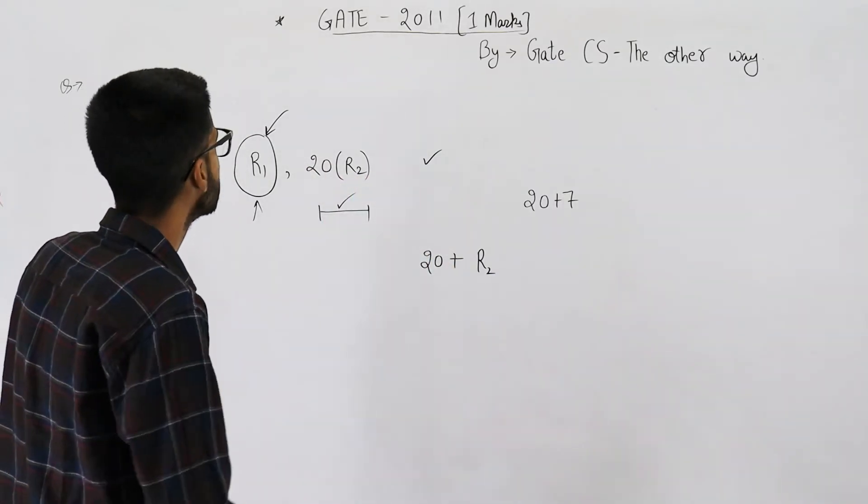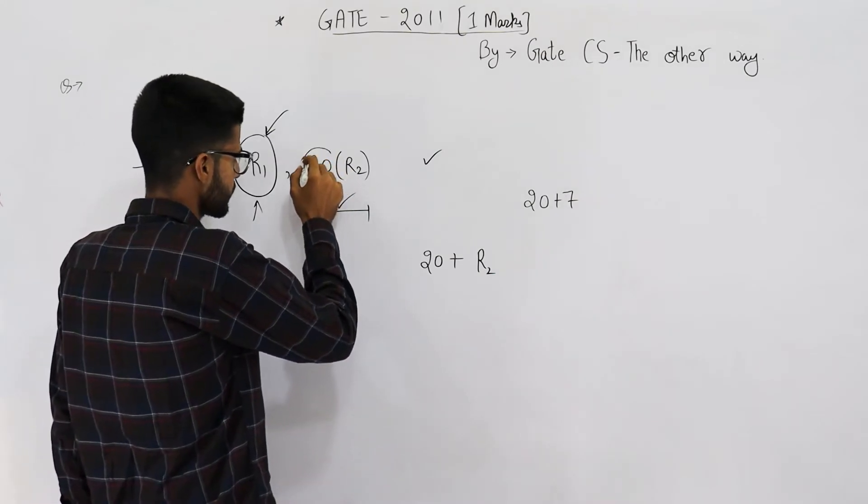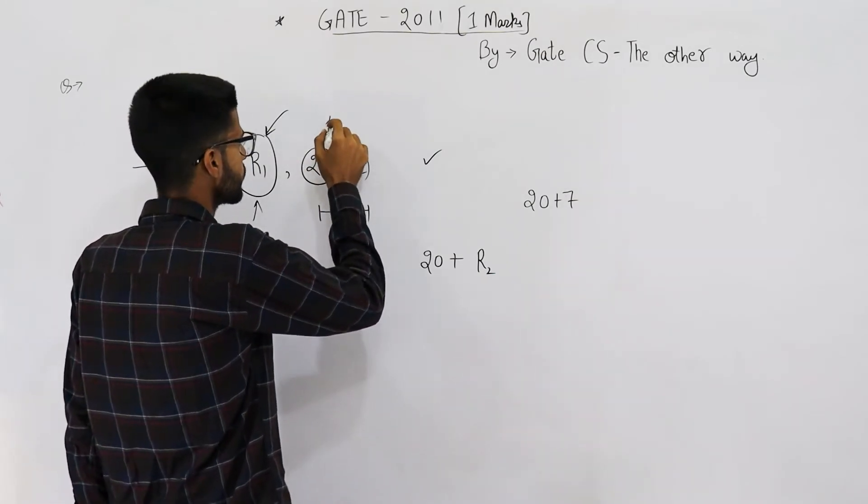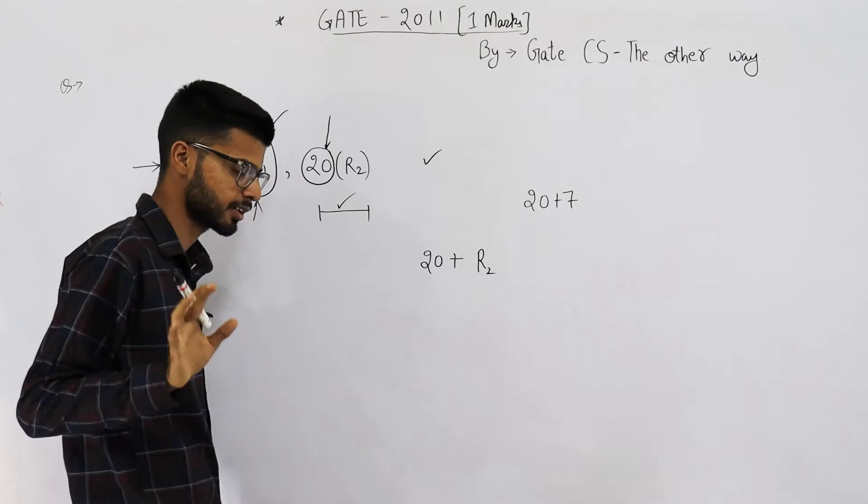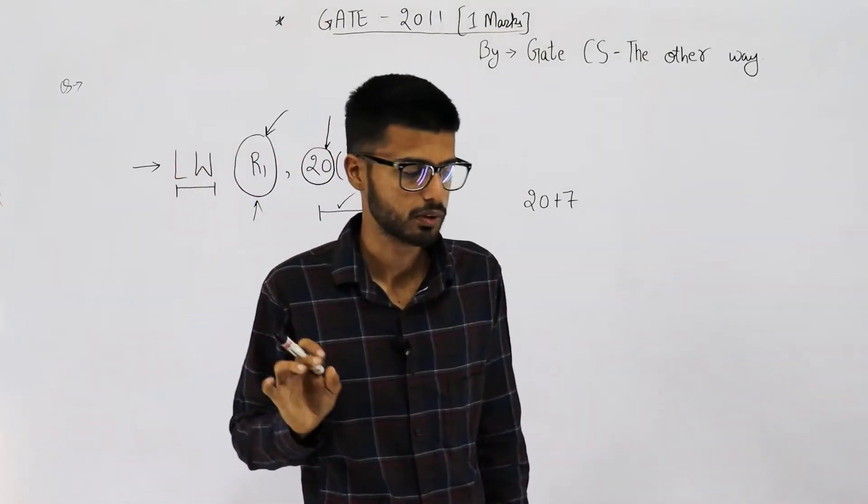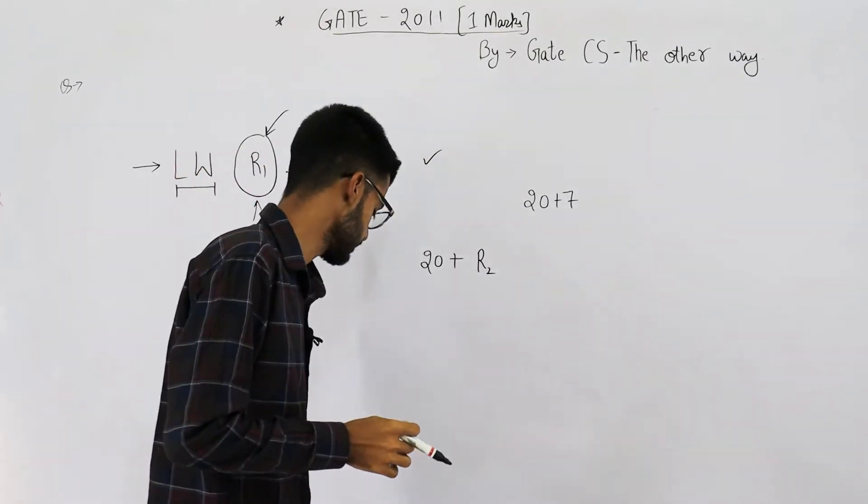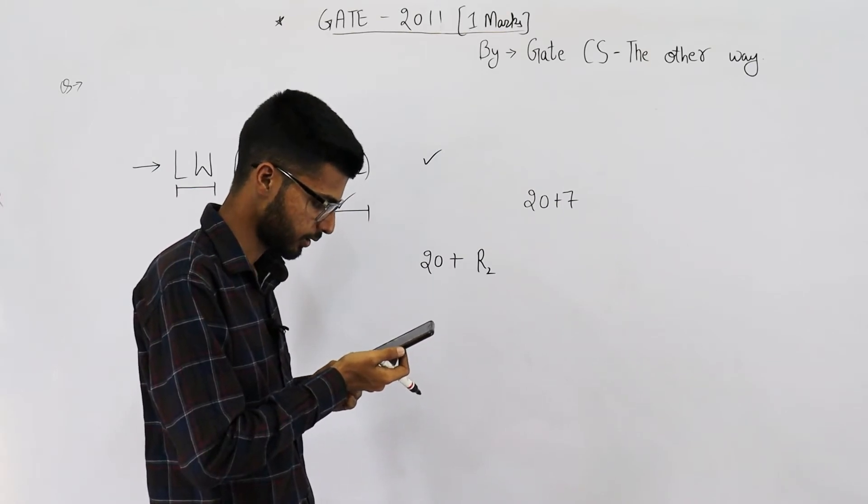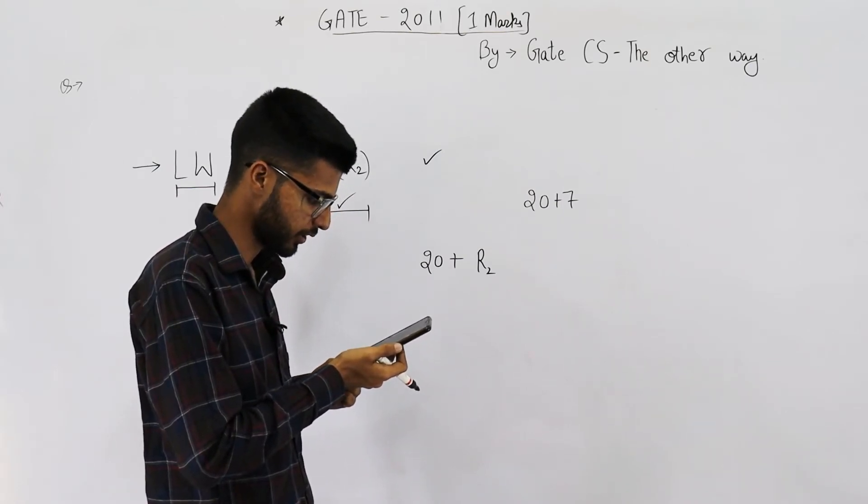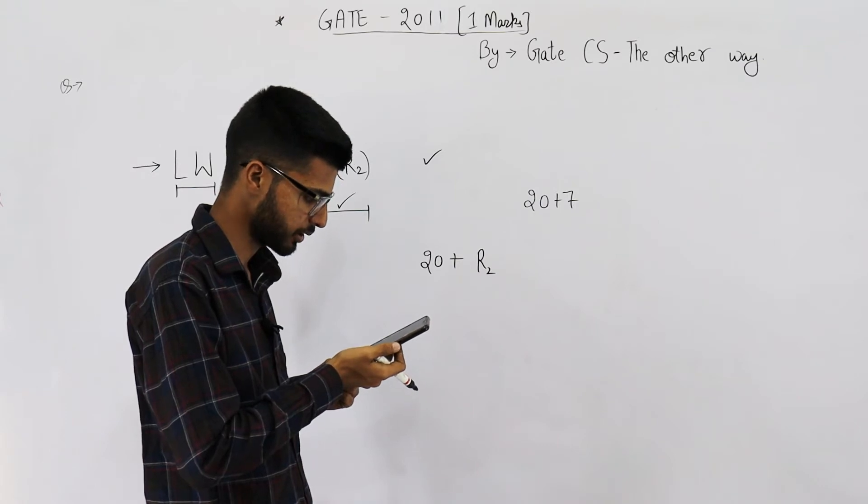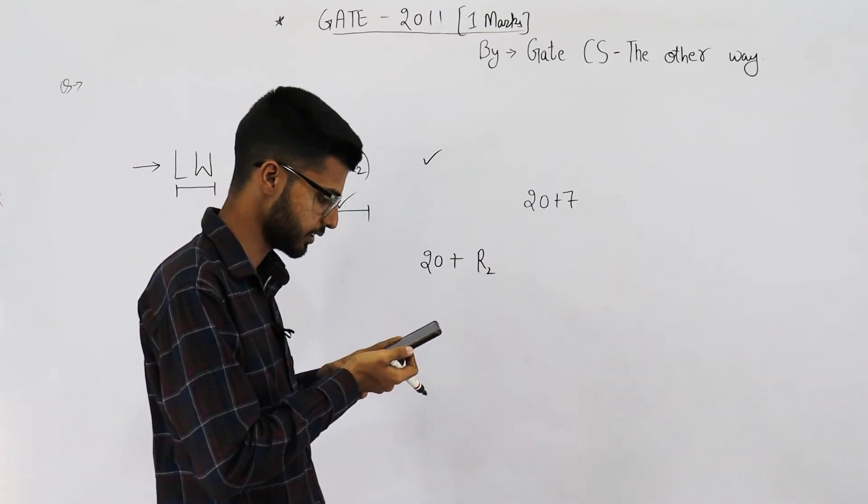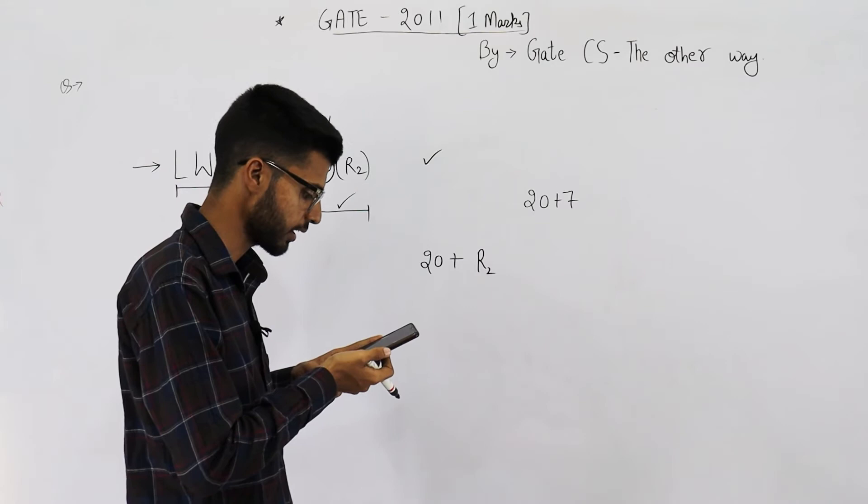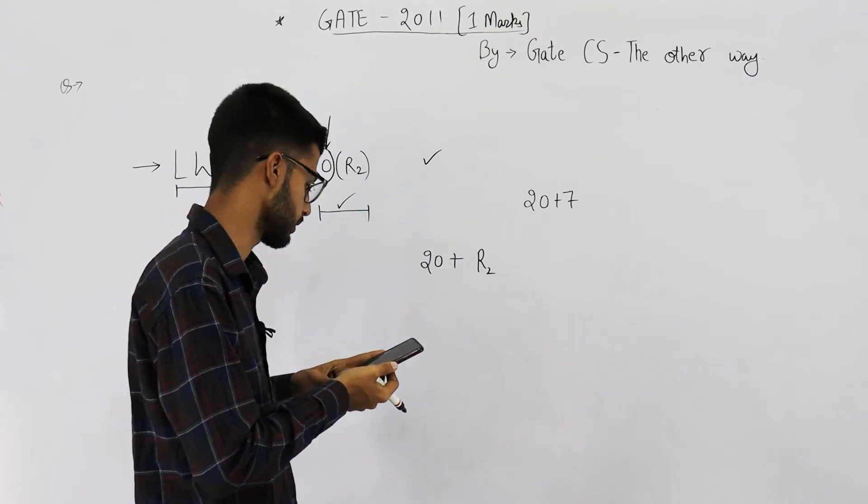First of all, this is a constant. 20 is a constant and it's mentioned in the question only. The statement says a constant 20. The address of memory location is obtained by the addition of a constant 20 and the contents of register R2.